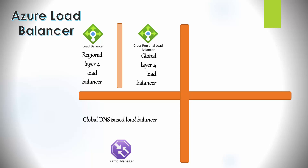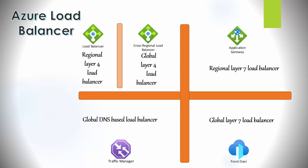Then there is the Azure Traffic Manager, which is a global DNS-based load balancing solution that load balances traffic across multiple regions using DNS. The next one is the Azure Application Gateway, which is a Layer 7 web traffic load balancer for web applications. Finally, there is Azure Front Door, which is similar to the cross-regional load balancer in how it uses anycast and entry points, but it is a Layer 7 load balancer with lots of Layer 7 functionality built in.